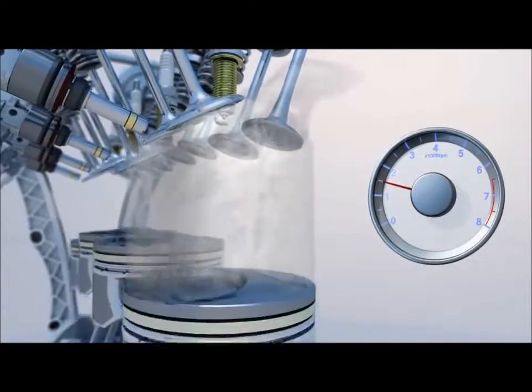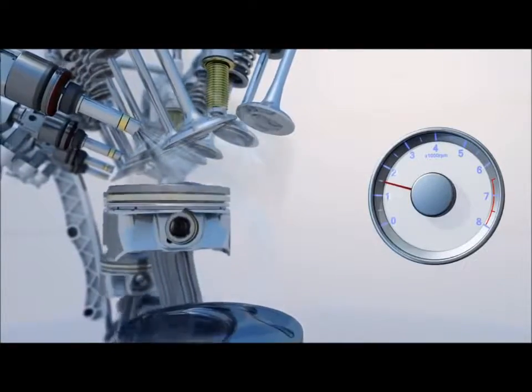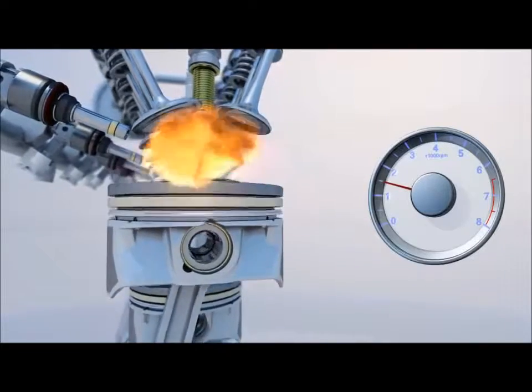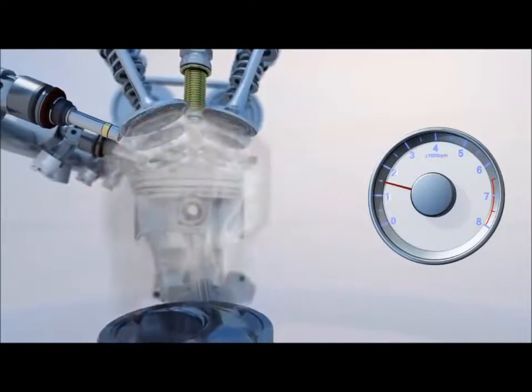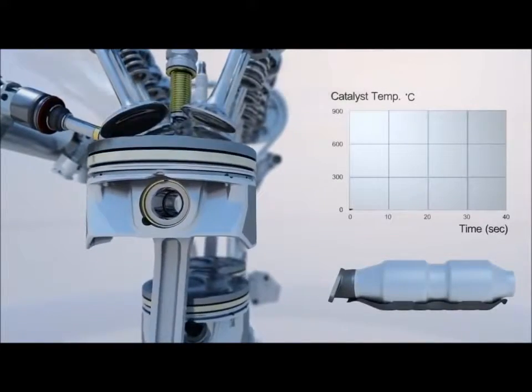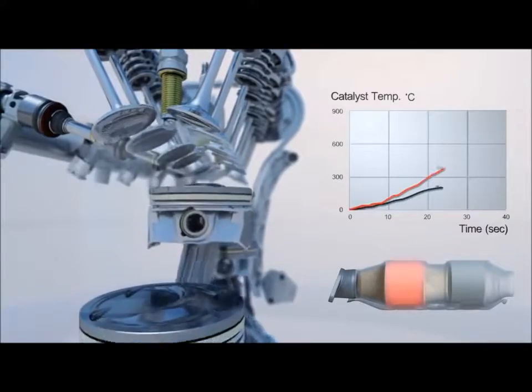After the start, the split injection helps to obtain a stable combustion, even with the late ignition to increase the exhaust energy. This increased exhaust energy lights off the catalyst faster by more than 50%. Thanks to the fast light off, the exhaust emission is reduced.